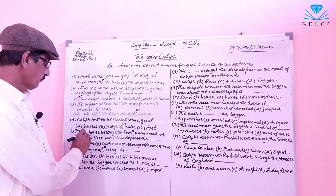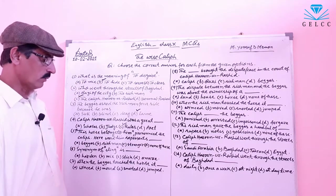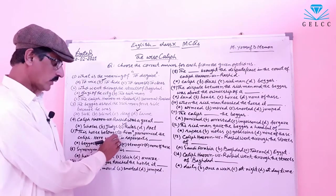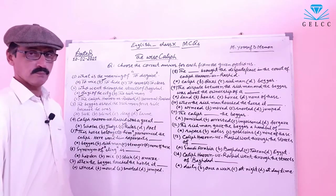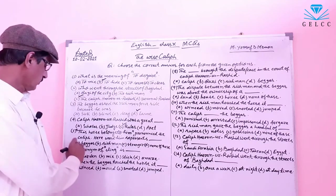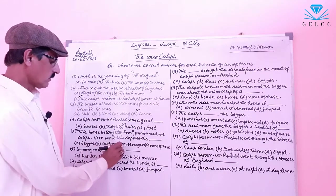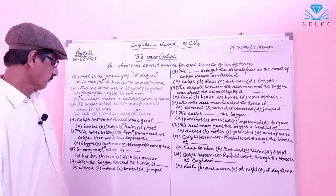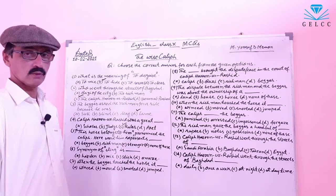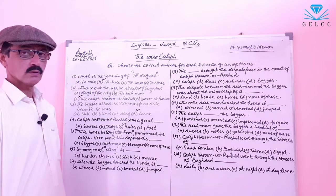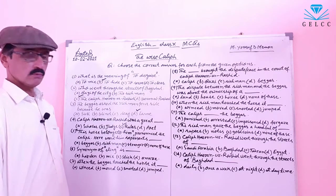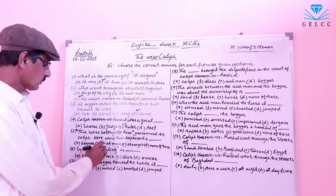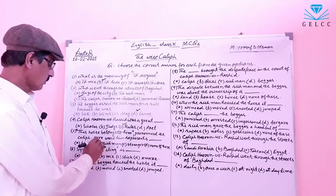Number 5: 'This house belongs to him,' pronounced the Caliph. Here the word 'him' represents: A: Beggar. B: Rich man. C: Stranger. D: None of these. The correct answer is option B — rich man. So the word 'him' represents the rich man.